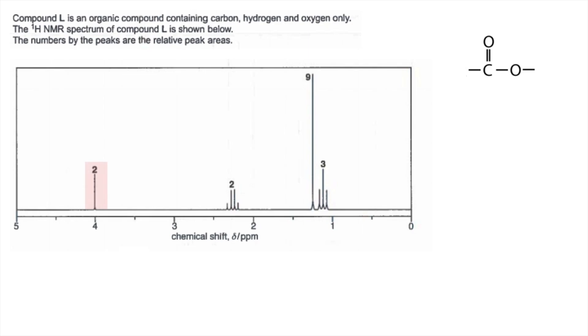So starting with this absorption here, or this peak here, so that's a singlet, so use the correct terminology, singlet at delta 4.0 is due to the H-C-O environment. So we're talking about this side of the ester bond. There's no adjacent hydrogens, that's what a singlet tells us, but the area is 2, so it must be a CH₂ causing the peak. And so that part of the molecule is going to look like this.